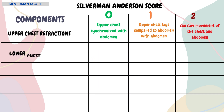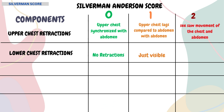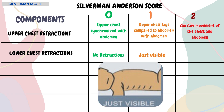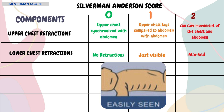Then comes lower chest retractions. If there are no retractions, a score of 0 is given. If there are just visible retractions, a score of 1 is given. If retractions are marked, a score of 2 is given.